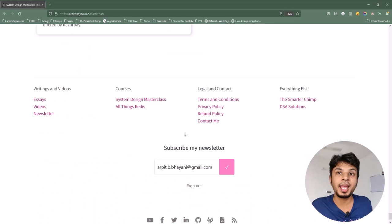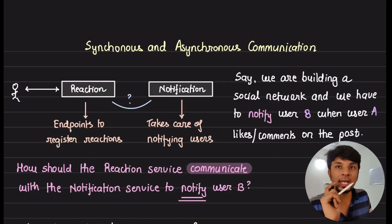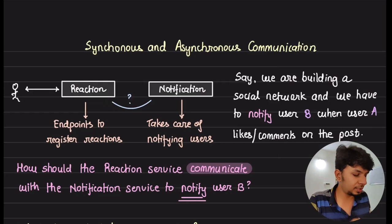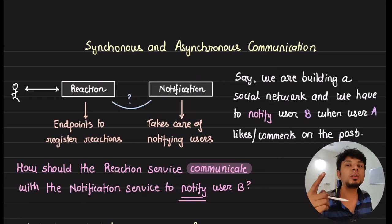Now back to the video. Say we're building a social network with a reaction service and a notification service. Whenever user B posts something, user A can react — like, share, or comment — and as soon as that reaction happens, a notification needs to be sent to user B, the post creator. So how would the reaction service talk to the notification service to send out that notification? That's exactly what we'll be discussing today.